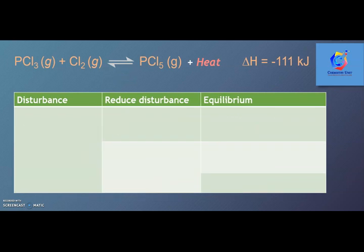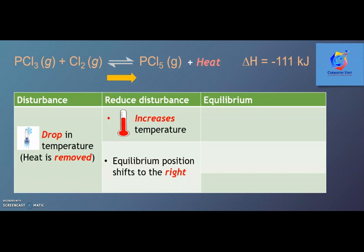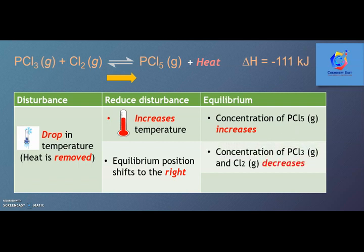If the disturbance is a drop in temperature, the system will increase the temperature to reduce the disturbance. The equilibrium position will shift to the right, so the concentration of PCl3 gas and Cl2 gas decreases, whereas the concentration of PCl5 gas will increase. What happened to the equilibrium constant Kc? It will increase.